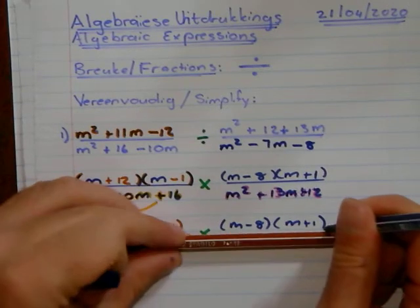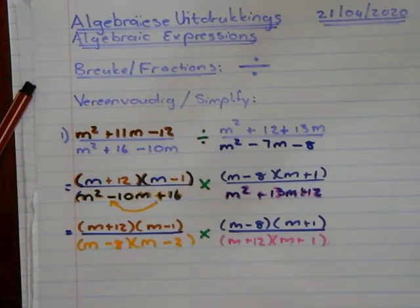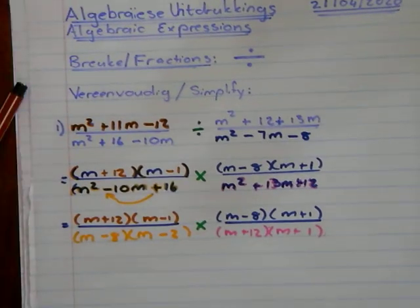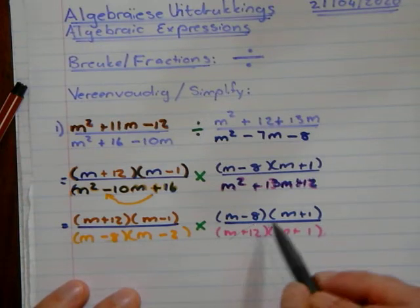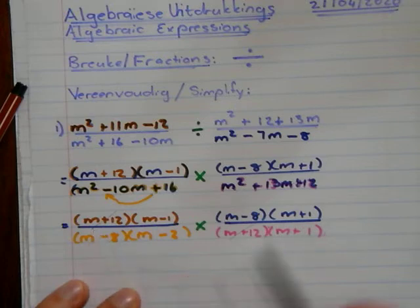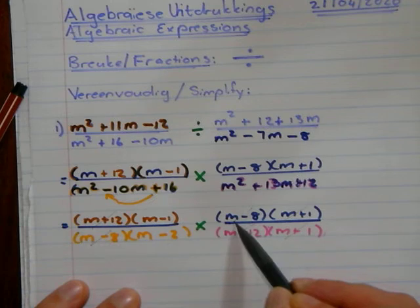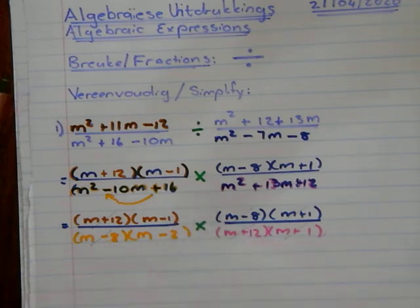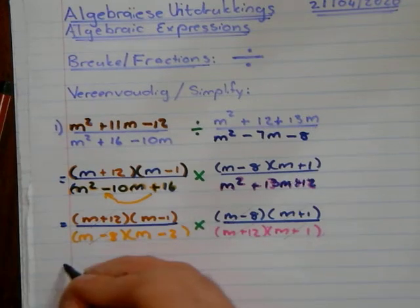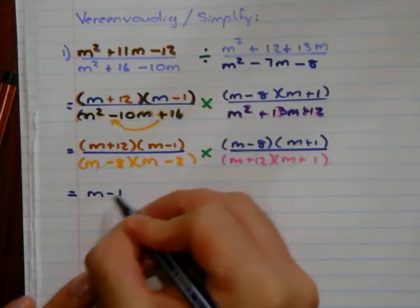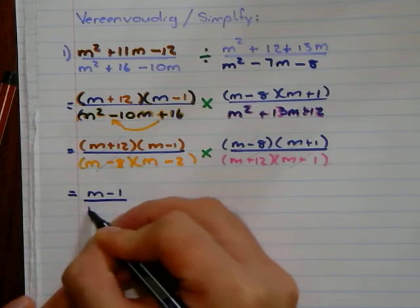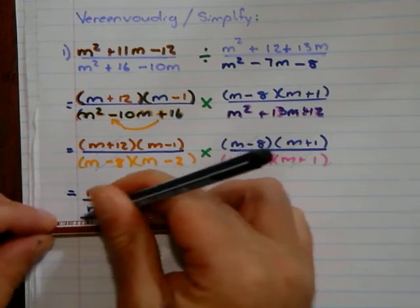Because there's a multiplication sign now, I take my pencil. We take our pencil and see what can divide out. There's M plus 1, M plus 12, and there's M plus 12. There's M plus 1, M plus 1. M minus 8, M minus 8. What's left is those two. So we end up with M minus 1 divided by M minus 2. That's my answer.